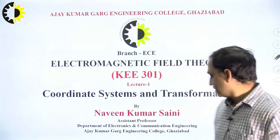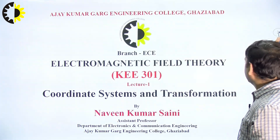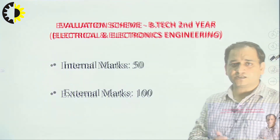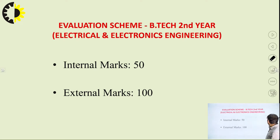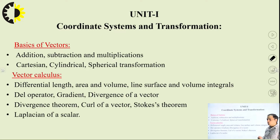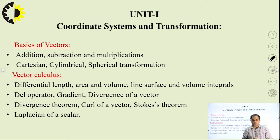Coordinate systems and the transformations. As per the syllabus, the evaluation scheme has internal marks of 50 marks and external marks of 100 marks. Before going into a deep understanding of electromagnetic field theory, the important starting point is coordinate systems and transformation — we will go through the pure basics.